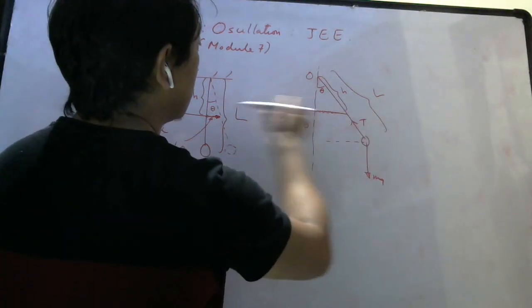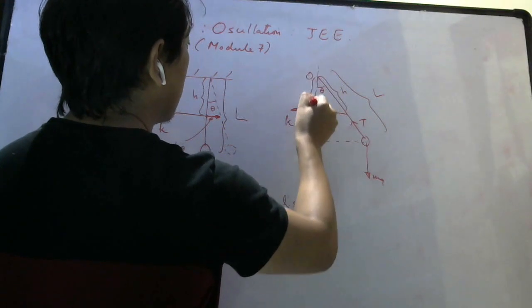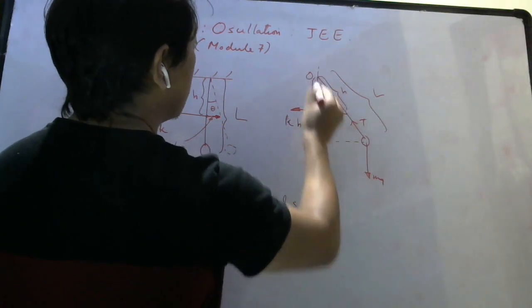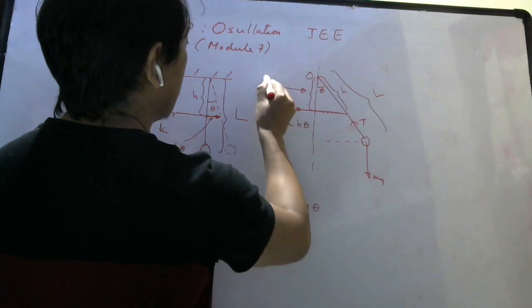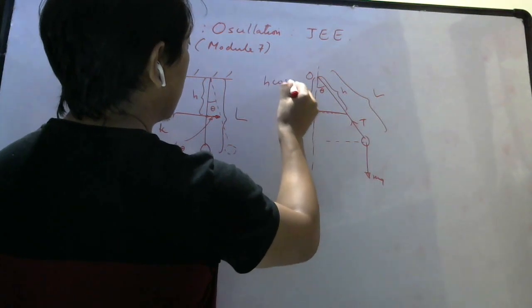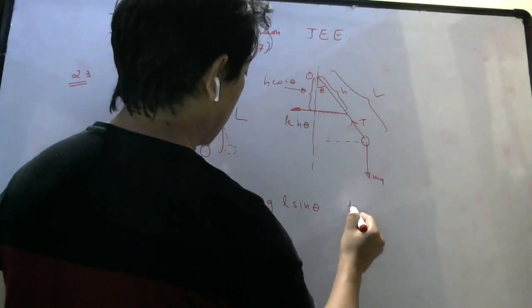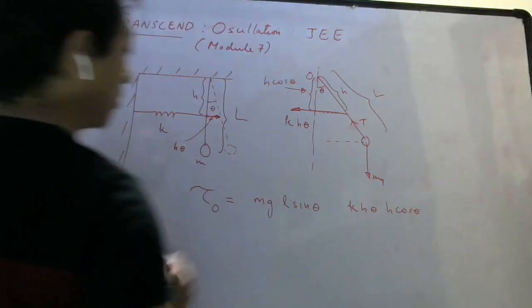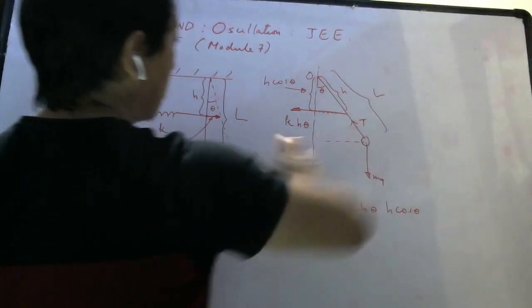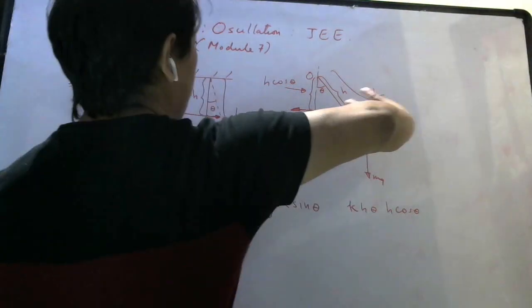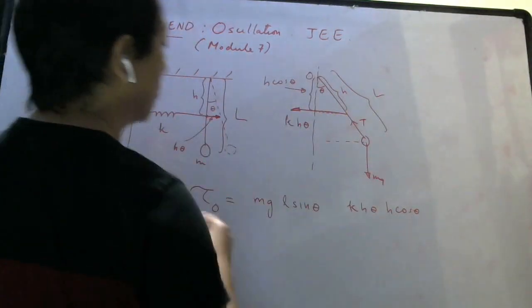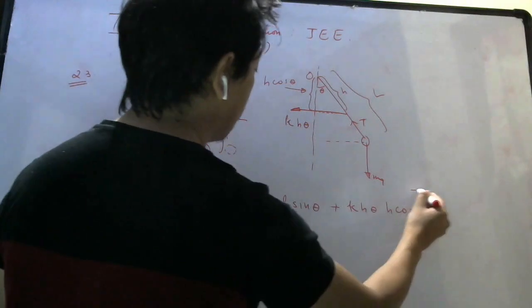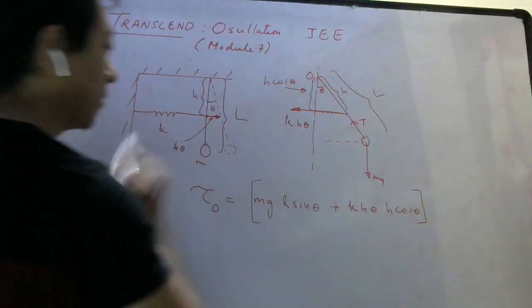What about torque due to this force? This force is here, this is the pivot. So this is your R perpendicular, which is H cosine theta. Force is KH theta, R perpendicular is H cos theta. What about the direction of these two torques? This will create torque this way. This force will also create torque this way about point O. So both are in the same direction and you can add.